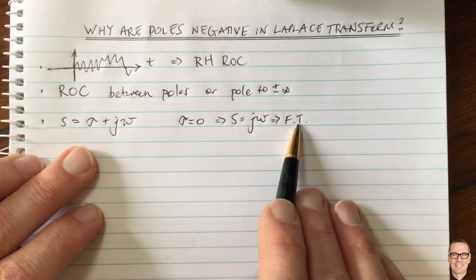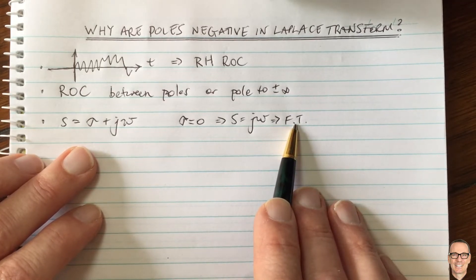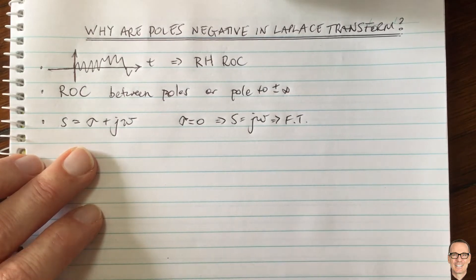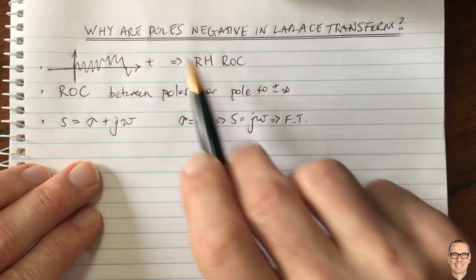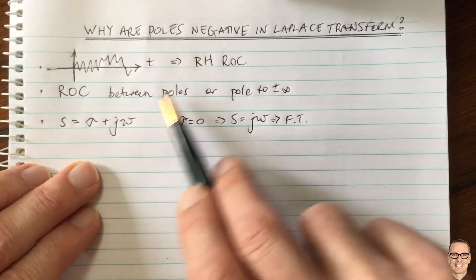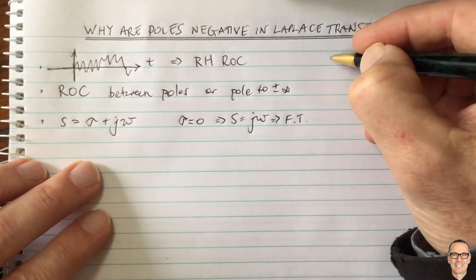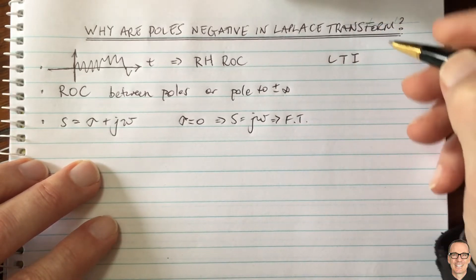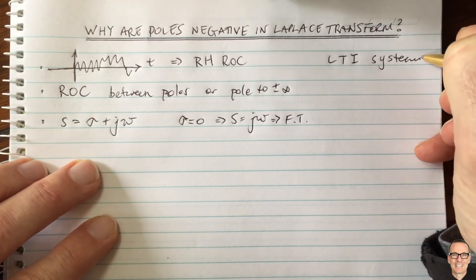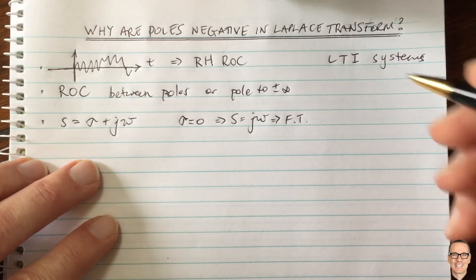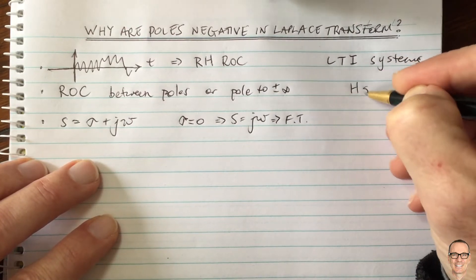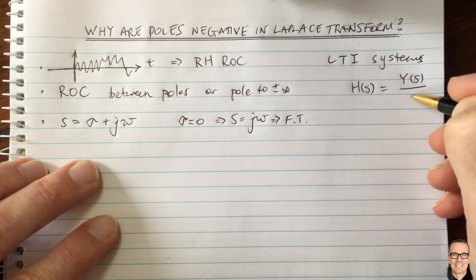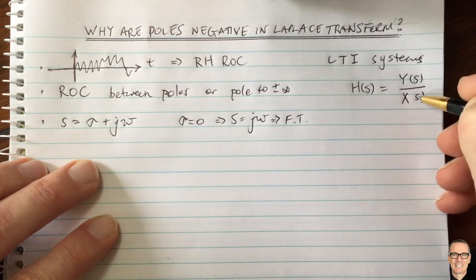Another thing we know is that Fourier transforms can be performed when a function has finite energy. So where does this lead us for negative poles? Let's consider linear time invariant systems. These are systems where we're interested in the impulse response, or in the Laplace domain, the system function — that is, the output divided by the input in the Laplace domain.